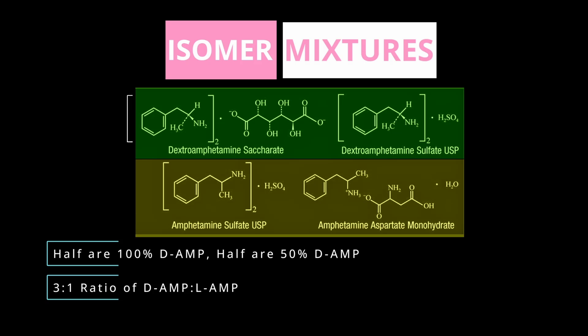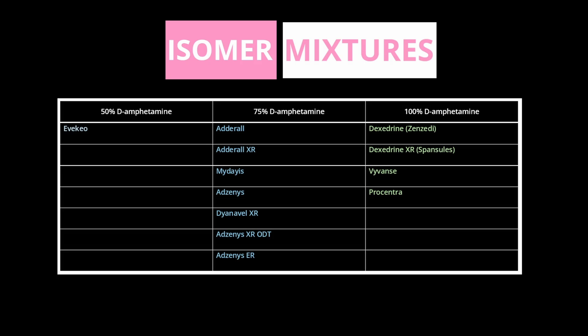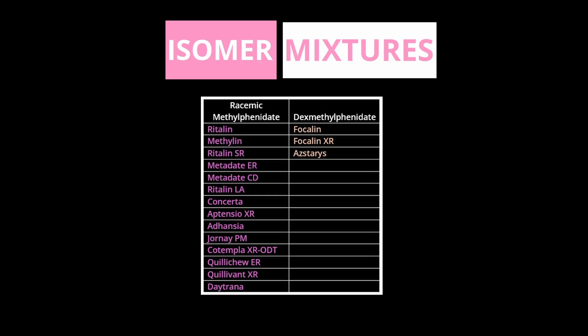We can sort the different stimulants by their isomer composition. Starting with amphetamines: the isomer mixture containing 50% D amphetamine is brand name Evekeo. Amphetamines containing 75% D amphetamine include Adderall, Adderall XR, Mydayis, Adzenys, Dyanavel XR, Adzenys XR-ODT, and Adzenys ER.